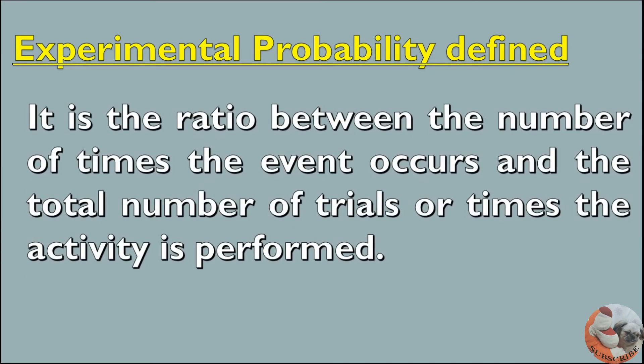What is Experimental Probability? It is the ratio between the number of times the event occurs and the total number of trials or times the activity is performed.